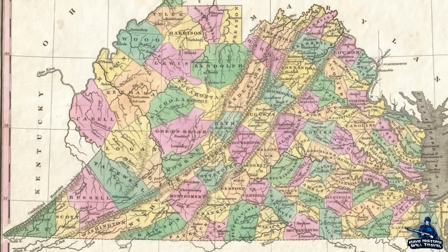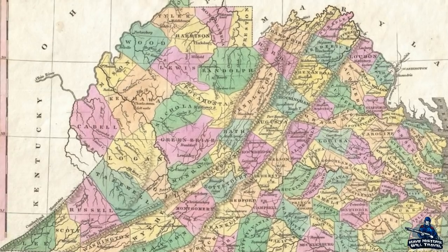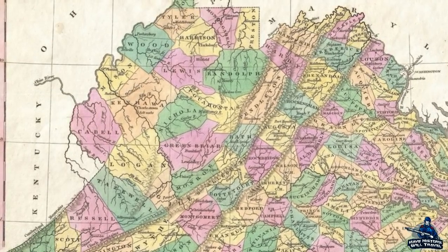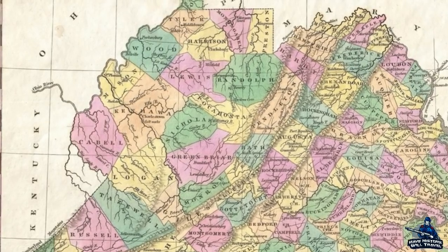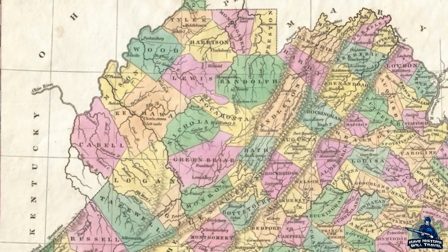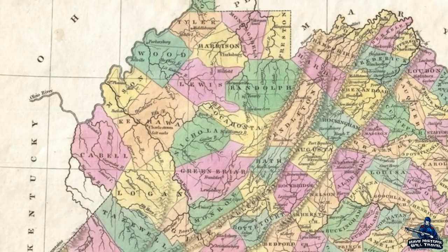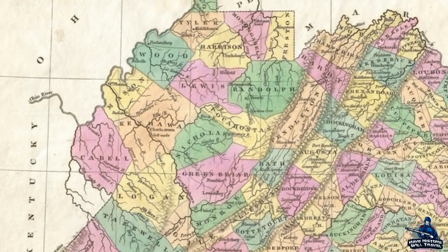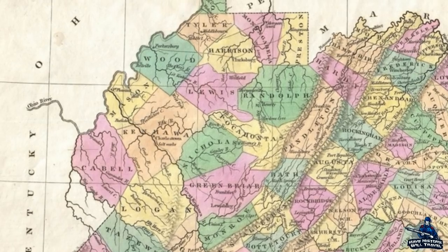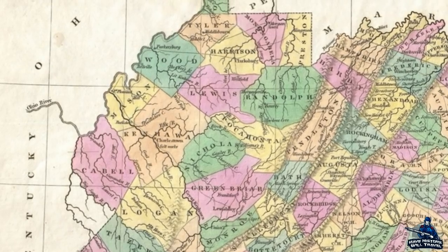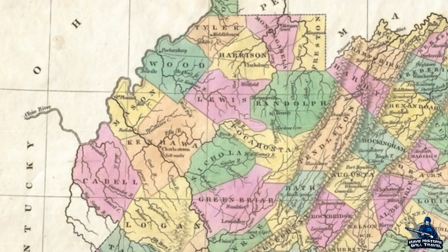The western portion of Virginia wanted representation based solely on the white population, but the eastern portion wanted it based on both the enslaved and non-enslaved population. Just like in 1787, they compromised: the lower house of the bicameral legislature was based on the white population, and the upper house was based on both white and enslaved populations. Clearly, there was a political divide between the two.